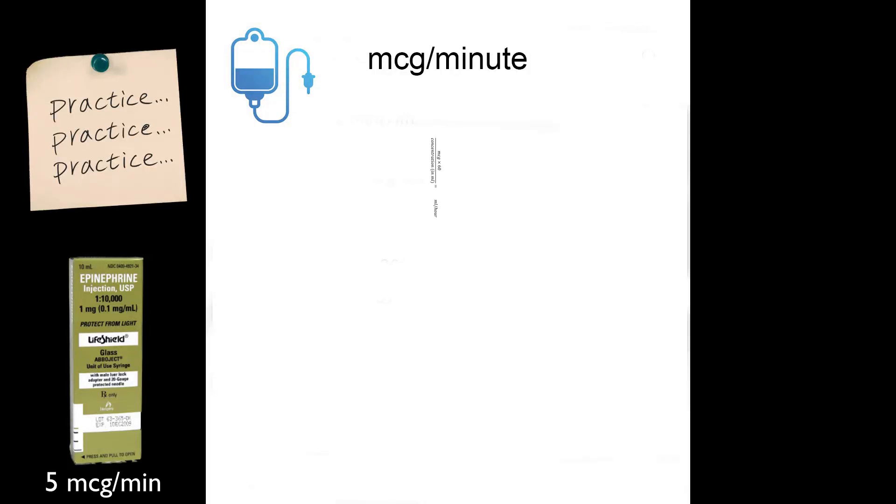I reach into my pocket and I pull out my reference cards, and I find this formula: micrograms (or mics) times 60 divided by concentration equals milliliters per hour. The milliliters per hour is the number we're looking for so we can program our pump.